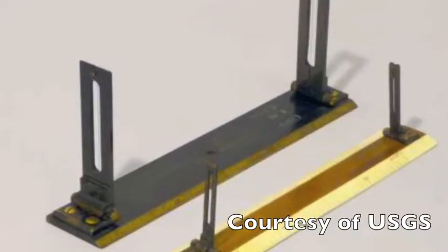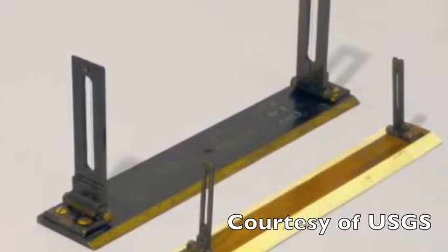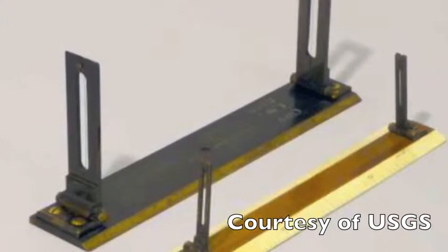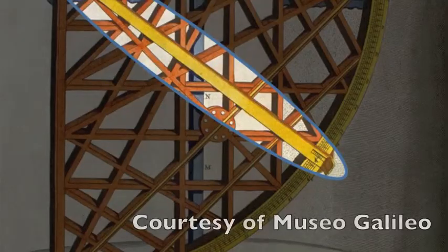Originally the allidade was a simple ruler-shaped object with a sight marker attached to each end. As the allidade developed, it was attached to a graduated circle marked with degrees. This allowed the measurer to set the allidade in a horizontal plane and measure the angle between sighted objects with greater precision.